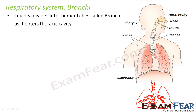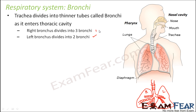In the right lung it splits into three bronchi and in the left lung it splits into two bronchi. The right bronchus divides into three bronchi and the left into two. These tube-like structures will further divide into thinner tubes, which in turn will further divide, and that is how they are named as primary, secondary, and tertiary bronchi.